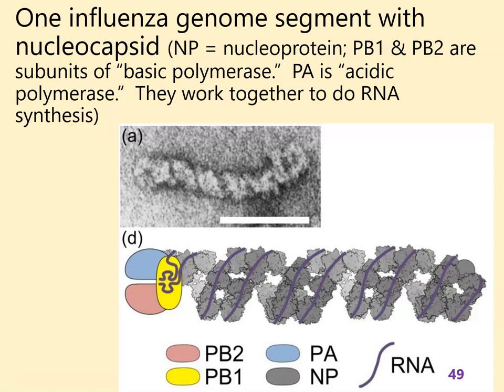This is a nucleocapsid — an RNA genome segment with everything attached to it. The nucleoprotein makes up most of it; it's a capsomere protein that protects the RNA. This is a negative-sense single-stranded RNA virus, so this RNA cannot be translated. A positive-sense copy — a positive-sense reverse complement — must be made before anything else can happen. And that's what these enzymes are going to do: they work together to perform all the different steps needed to start making a reverse complement.